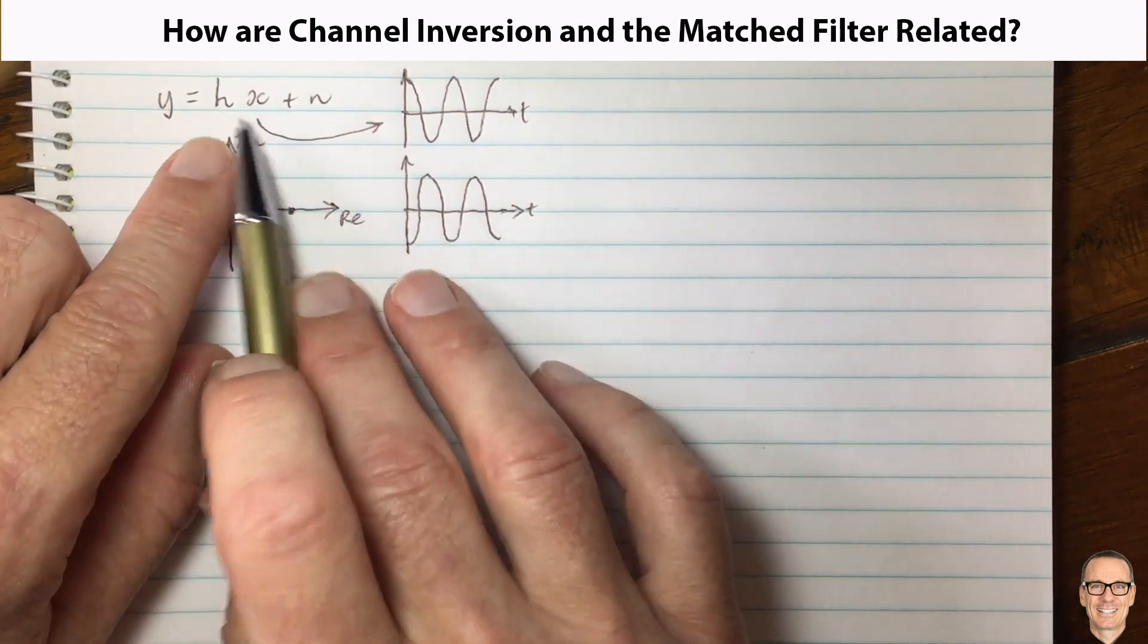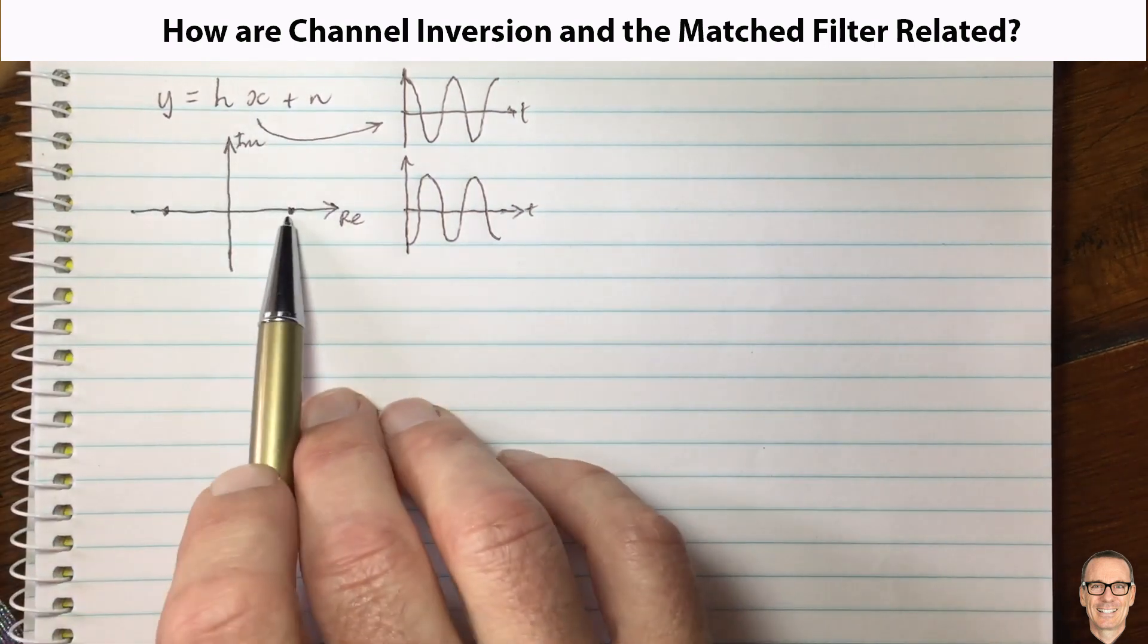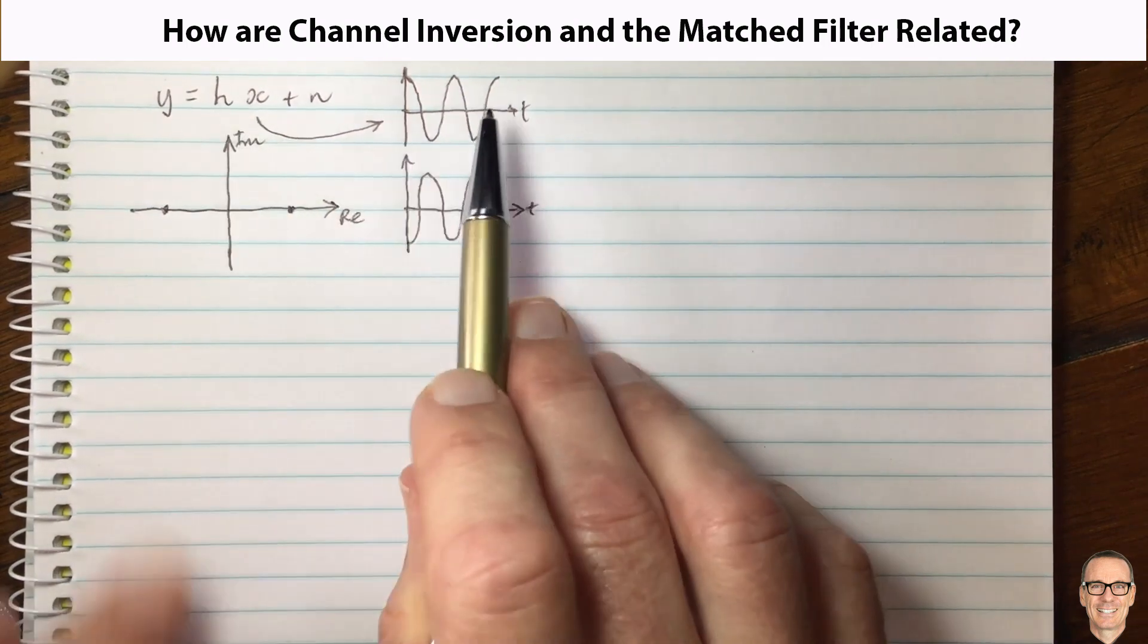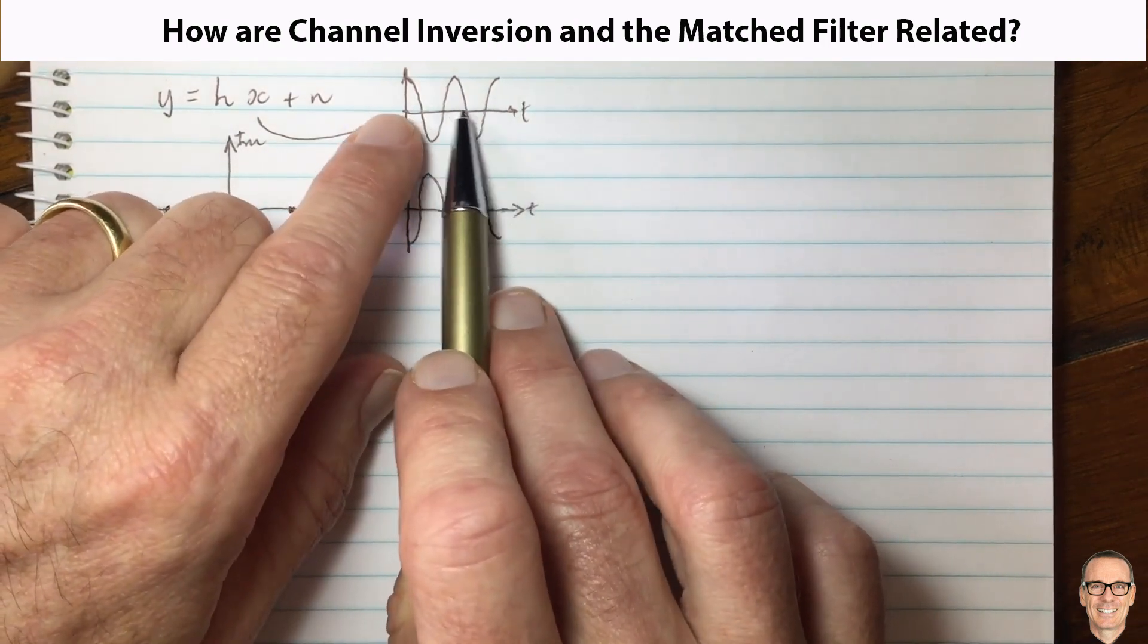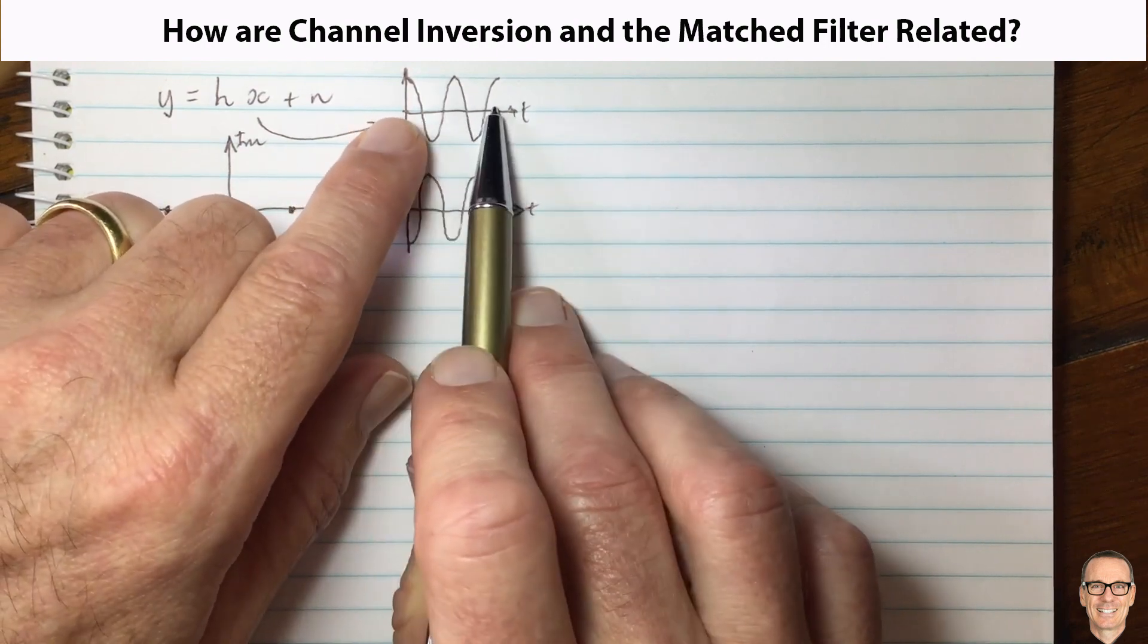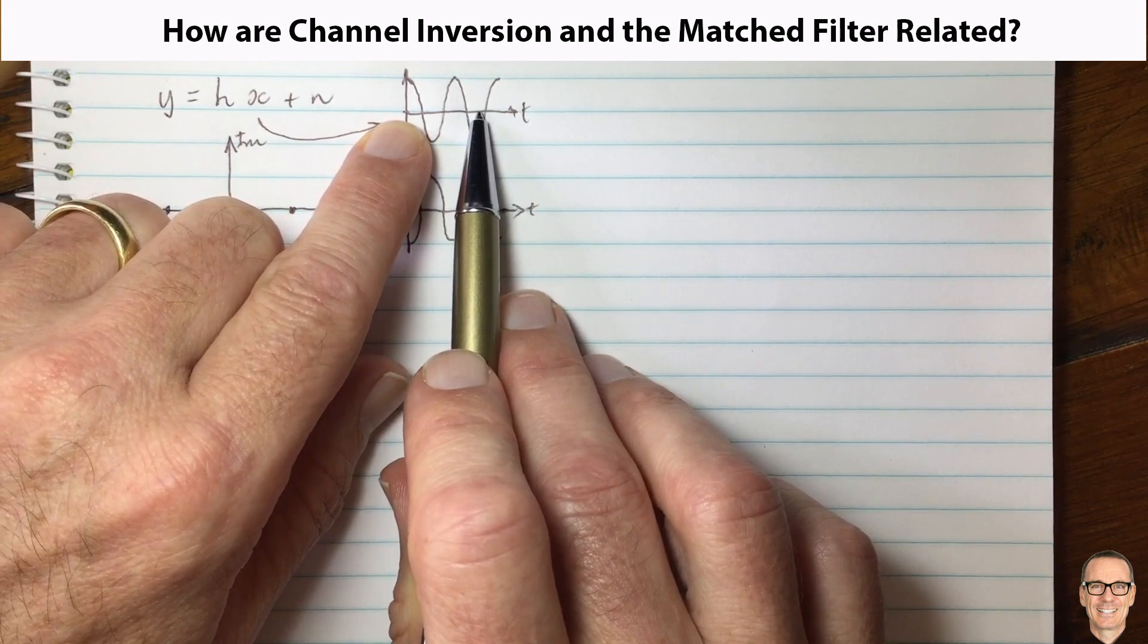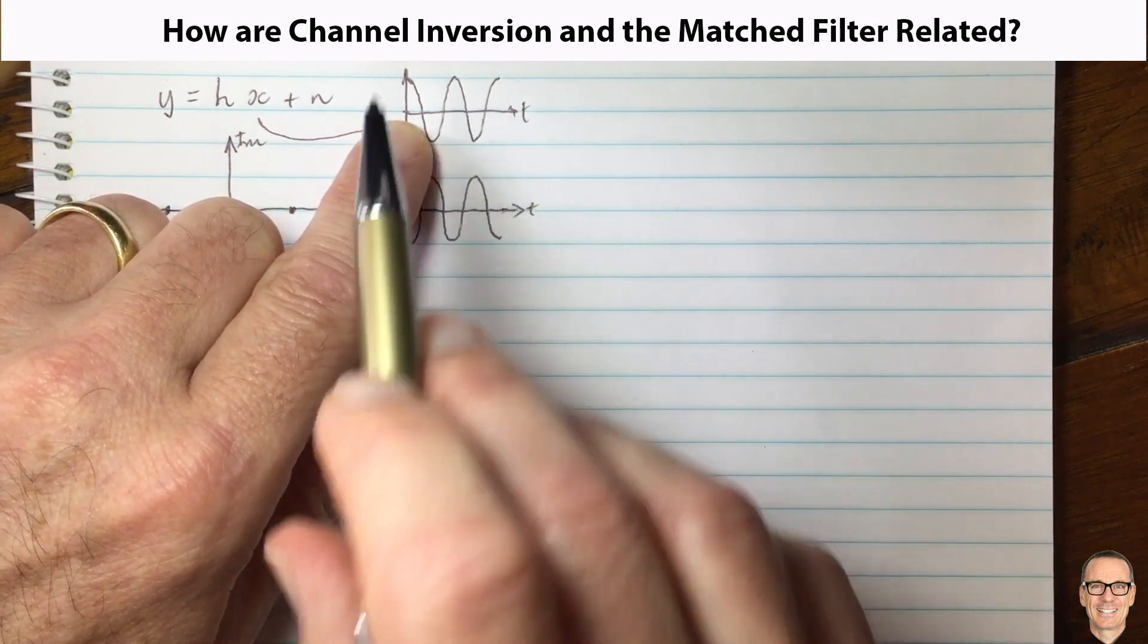That's x. What about h? Well, what h is going to do is multiply x by a complex number, and that means for these waveforms it's going to rotate these waveforms or shift the phase and multiply the amplitude.